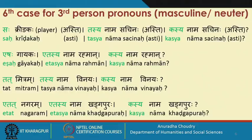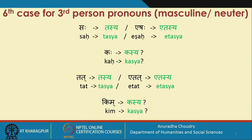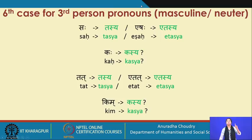Looking at the forms on screen: sah becomes tasya, eshah becomes etasya, kah becomes kasya. In the neuter: tat becomes tasya, etat becomes etasya, and kim becomes kasya.